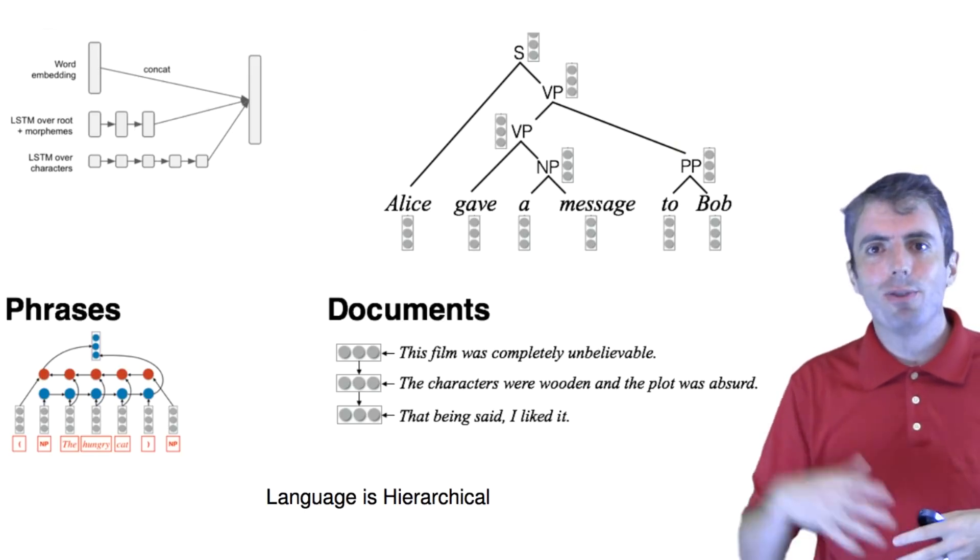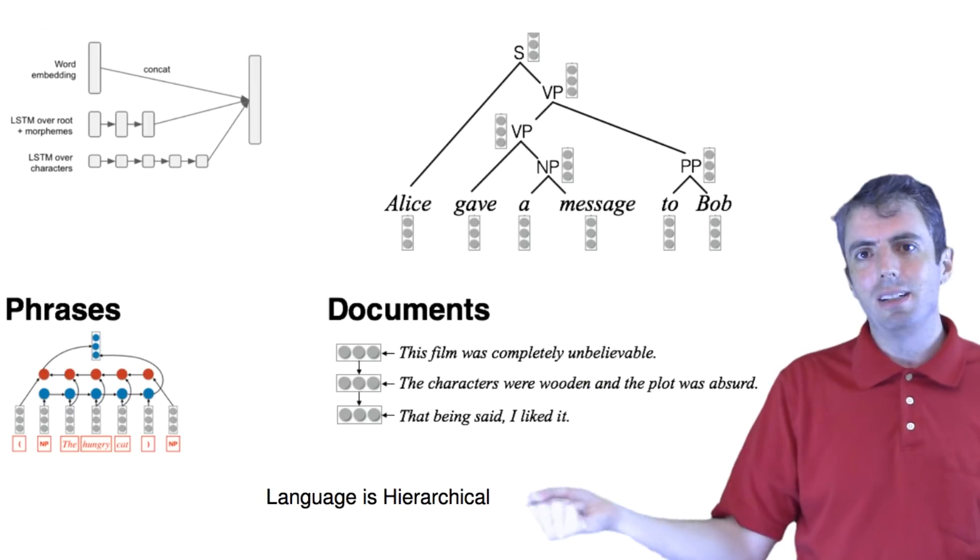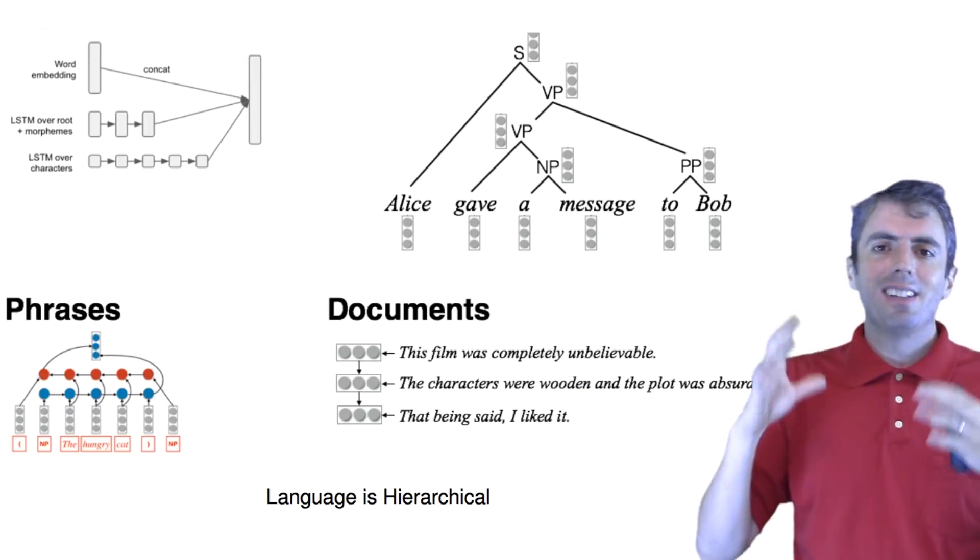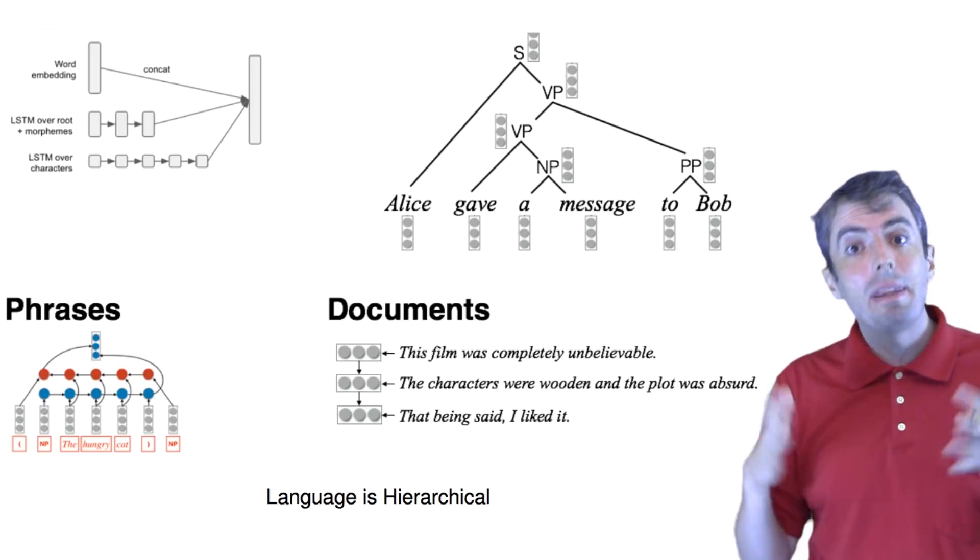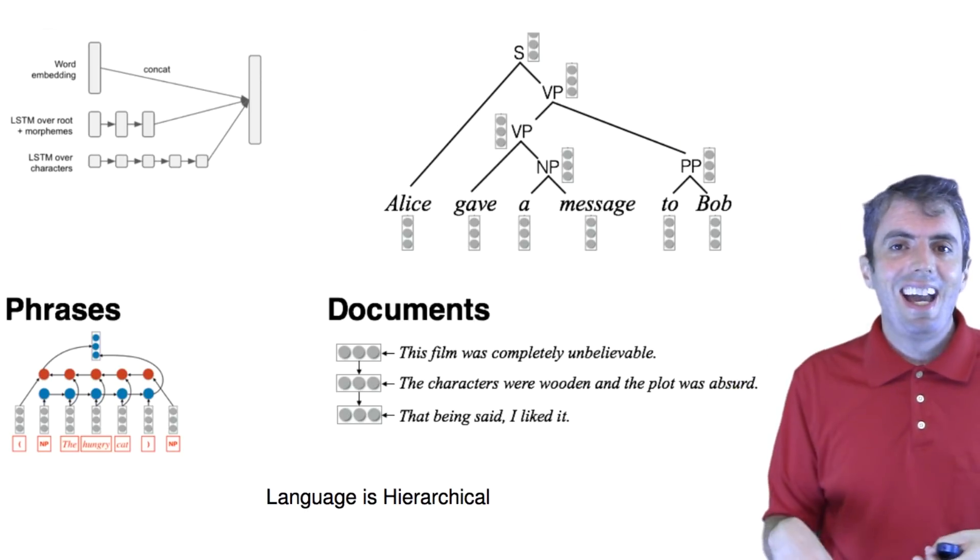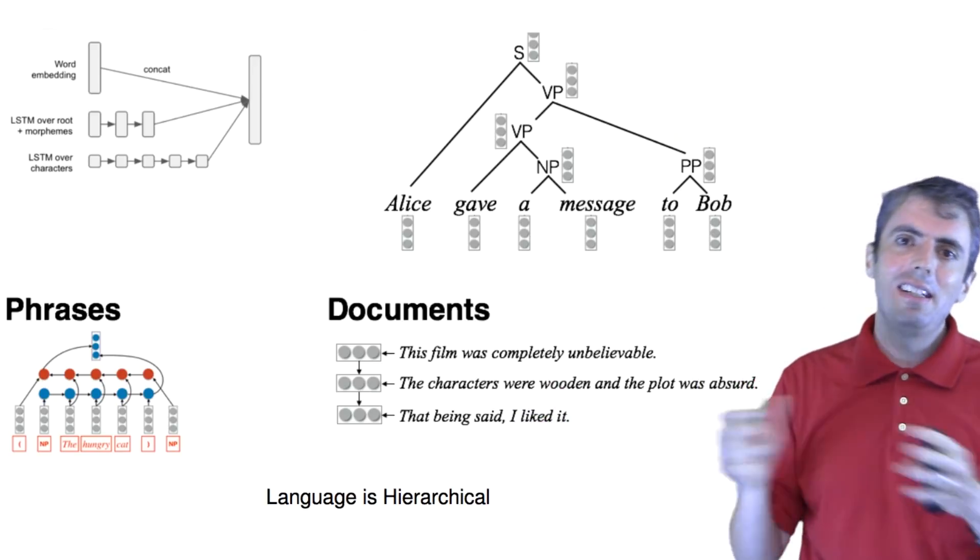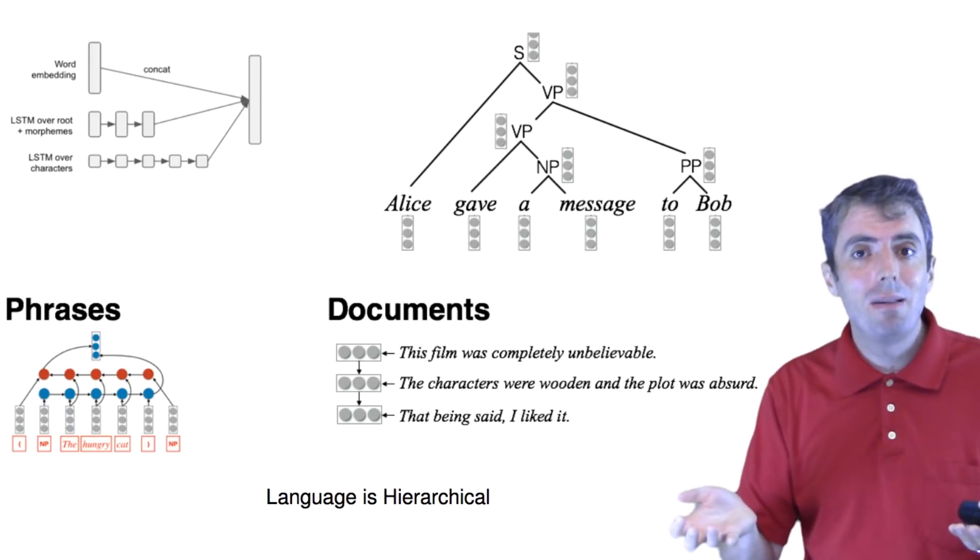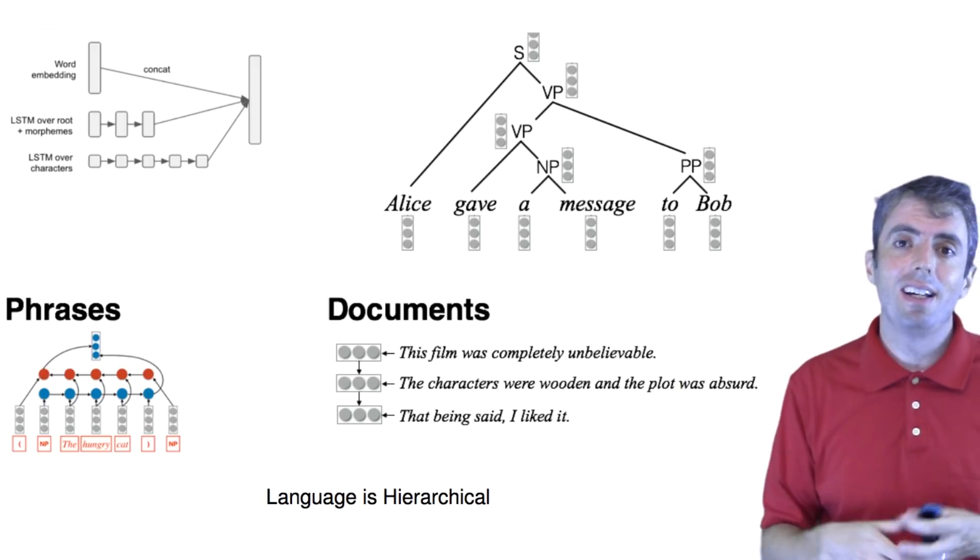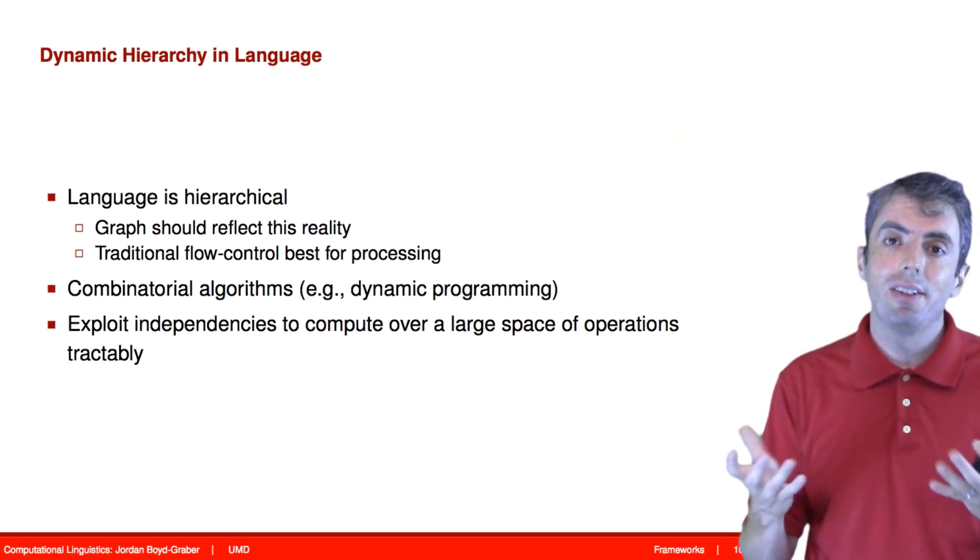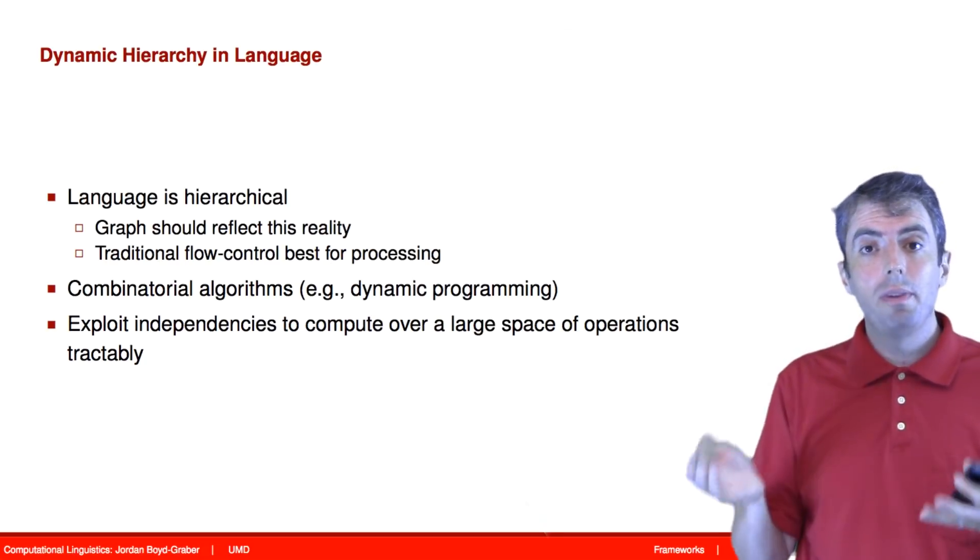And those phrases form sentences. Those sentences create documents. Those documents create chapters. And those chapters create books. And those books create libraries. And so you have hierarchy all the way down. And often, your models want to be able to incorporate that hierarchy. But this hierarchy is not fixed. You're not always looking at 32 by 32 pixel images. There can be any number of words in a sentence. Those words can have any number of letters. You can have many, many prefixes in a single word. So the graphs that you're using for the computations can vary dramatically. As a result, we want to have frameworks that allow us to have dynamic graph construction.